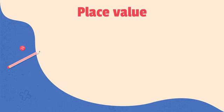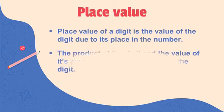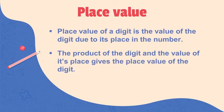Place value. The place value of a digit is the value of the digit due to its place in the number. It means the place value of a digit depends on its place in the number. The product of the digit and the value of its place gives the place value of the digit.